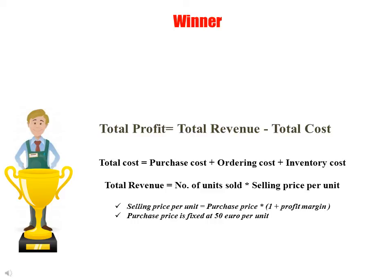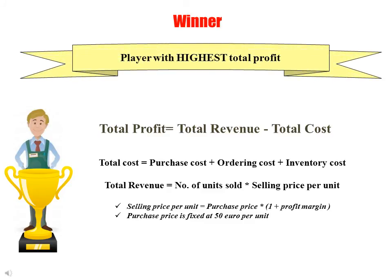The decisions you take will decide if you are the winner of the game. The winner will be the player with the highest total profit, defined as total revenue minus total cost. Total cost is the summation of total purchase cost, total ordering cost, and total inventory cost. Total revenue is calculated as the total number of units sold multiplied by the selling price per unit, where the selling price is the purchase price multiplied by (1 plus profit margin). The purchase price is fixed at 50 euro per unit.